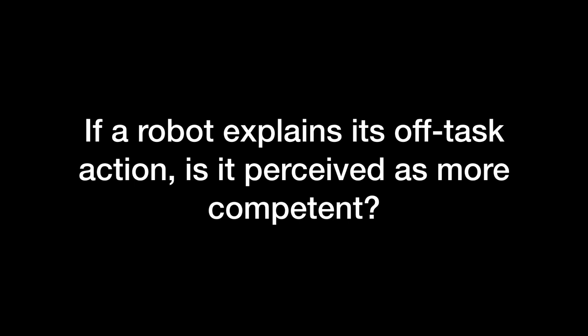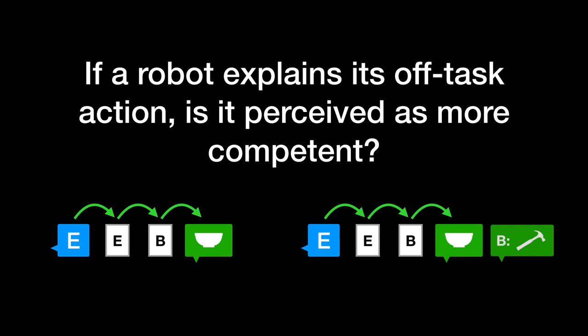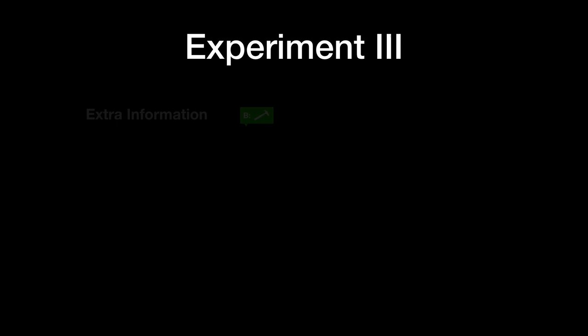We wanted to see if the robot could more directly affect how its off-task action was perceived by offering explanations, so we ran a third experiment. In addition to control and distance 1, we compared three additional videos. Each of these was the same as distance 1, but extended to show the robot offering some additional context after reporting.